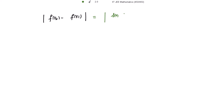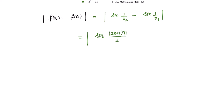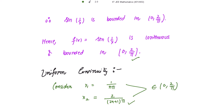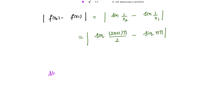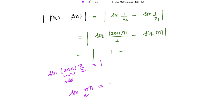Let's check |f(x2) - f(x1)|. That is |sin(1/x2) - sin(1/x1)|. Substituting x2 = 2/((2n+1)π) gives sin((2n+1)π/2), and substituting x1 = 1/(nπ) gives sin(nπ). This equals |sin((2n+1)π/2) - sin(nπ)|. Now sin((2n+1)π/2) is sin of an odd multiple of π/2, which always equals 1. And sin(nπ) = 0 for any integer n. So we get |1 - 0| = 1.